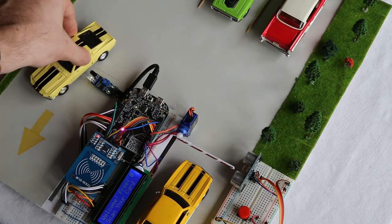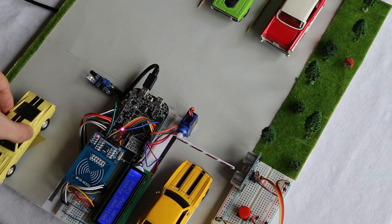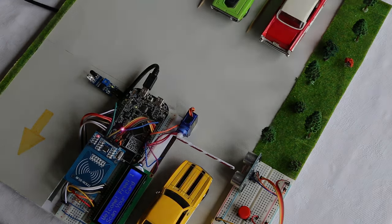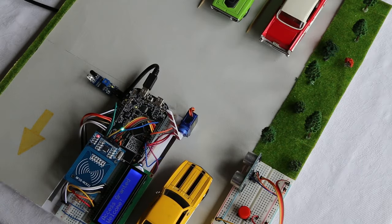When someone exits, the system recognizes this act by infrared sensor and updates the number of available spots. Now a car can get into the parking lot.